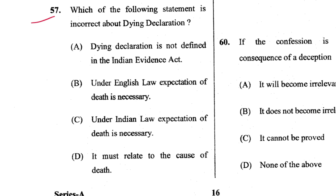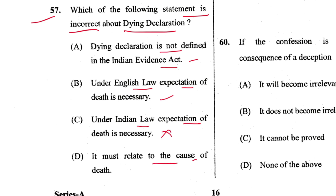Question 57: Which statement is incorrect about dying declaration? Dying declaration is not defined in the Evidence Act — correct. Under English law, expectation of death is necessary — correct. Under Indian law, expectation of death is necessary — this is incorrect; it must relate to the cause of death of the deceased. C is the answer. The provision for dying declaration is under Section 32(1) of the Evidence Act.